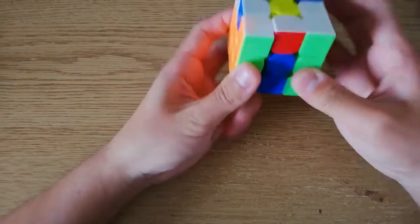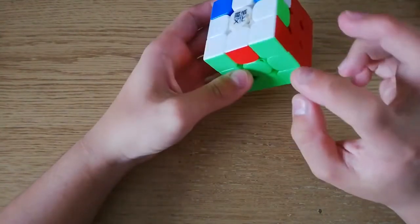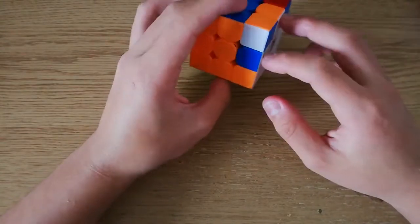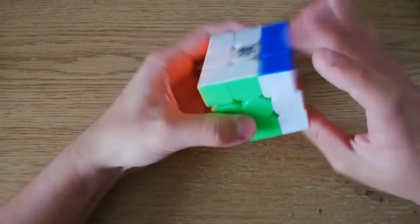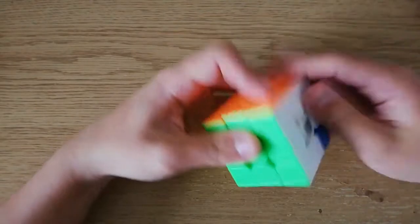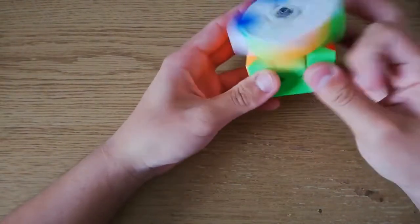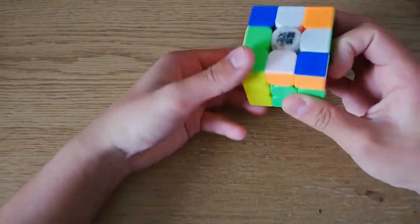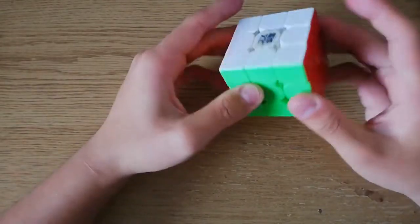So for this case, here, this is the Z perm, you can just do this algorithm, and you solve it. However, if it was like the other Z perm, so where these two are matching, you just do it left-handed. And then you've solved it.